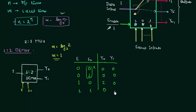So y0 is 0 and y1 is equal to i when e is 1 and S0 is 1. Now we will try to find out the expression for y0 and y1. I am not going to use k-maps because we can easily find out the expression by using this truth table.